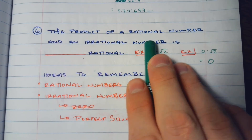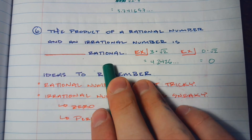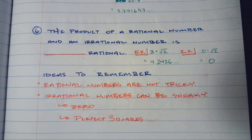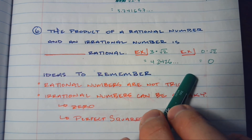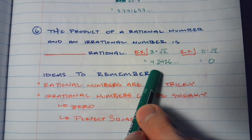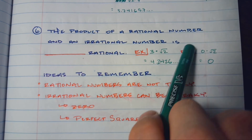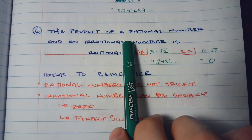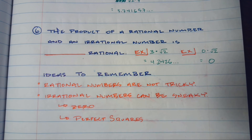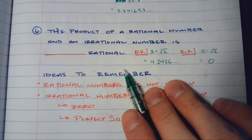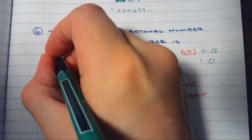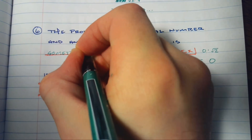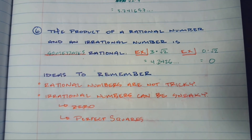The product of a rational number and an irrational number — is it always, sometimes, or never rational? Zero is our tricky case. If you multiply 3 times √2, you're going to get 4.2426... going on to infinity. But zero is our tricky rational number — when you involve zero as a multiplication factor with an irrational number, it suddenly makes it terminate. Zero times anything is just zero. So this is going to be sometimes rational, and we say that's true because zero throws us off — it's the case that prevents us from saying always.